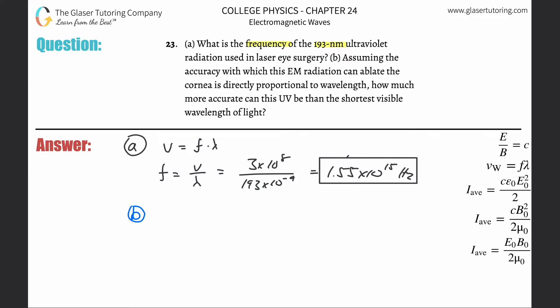Letter b: Now assuming accuracy with which this electromagnetic radiation can ablate the cornea is directly proportional to the wavelength, how much more accurate can this UV light be than the shortest visible wavelength of light? You would have to look this up on a table: the shortest wavelength of visible light is 380 nanometers, or 380 times 10 to the minus ninth meters.